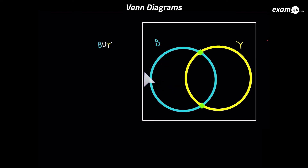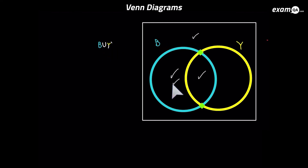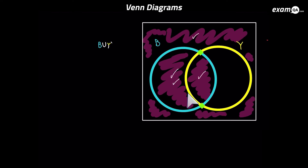Let's try the next one using the ticking method. Tick every region where it's B, and every region where it's not Y — that's the outside and here. This time it's OR, so we can include every region which has got a tick, whether it be one or two ticks.